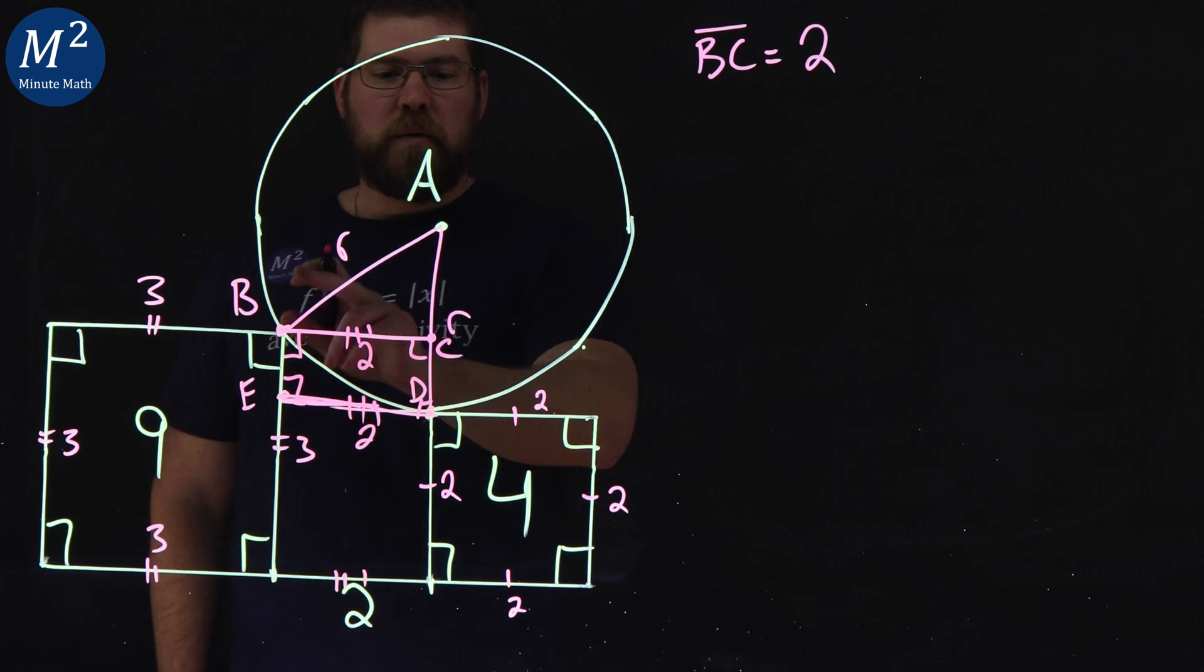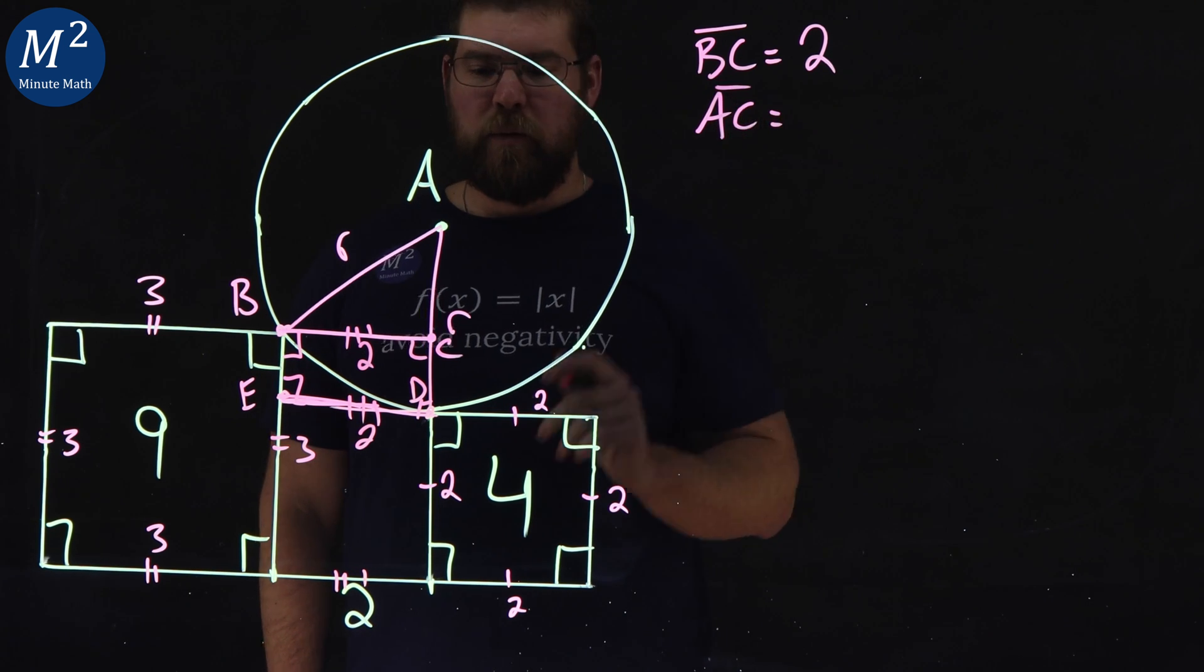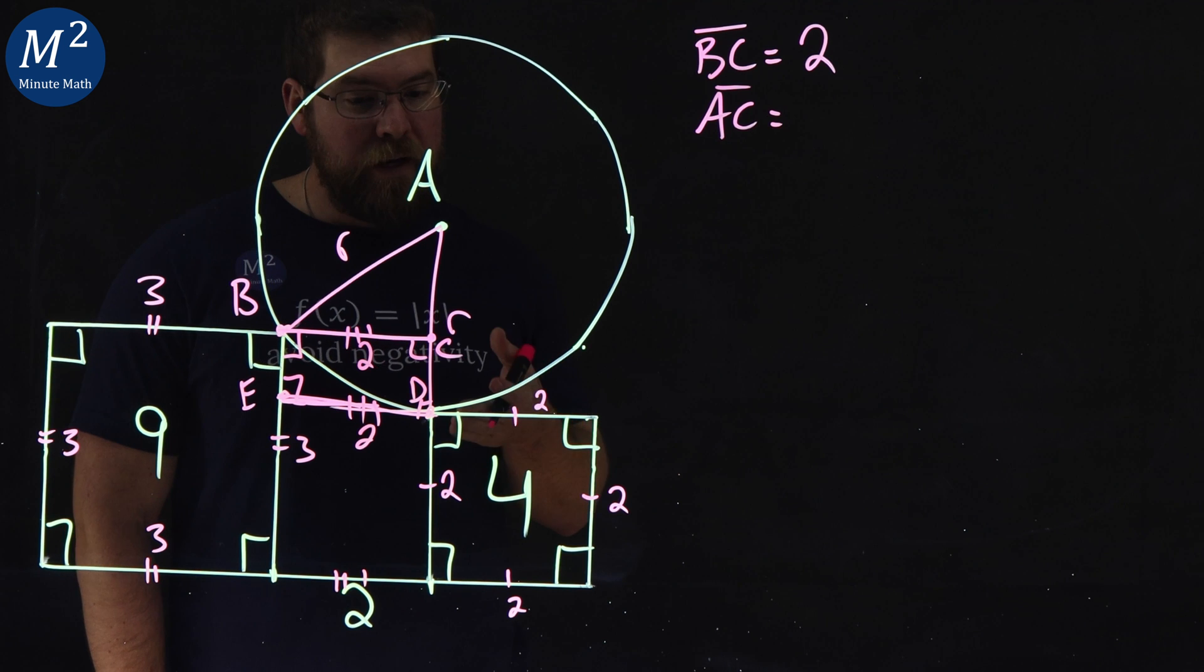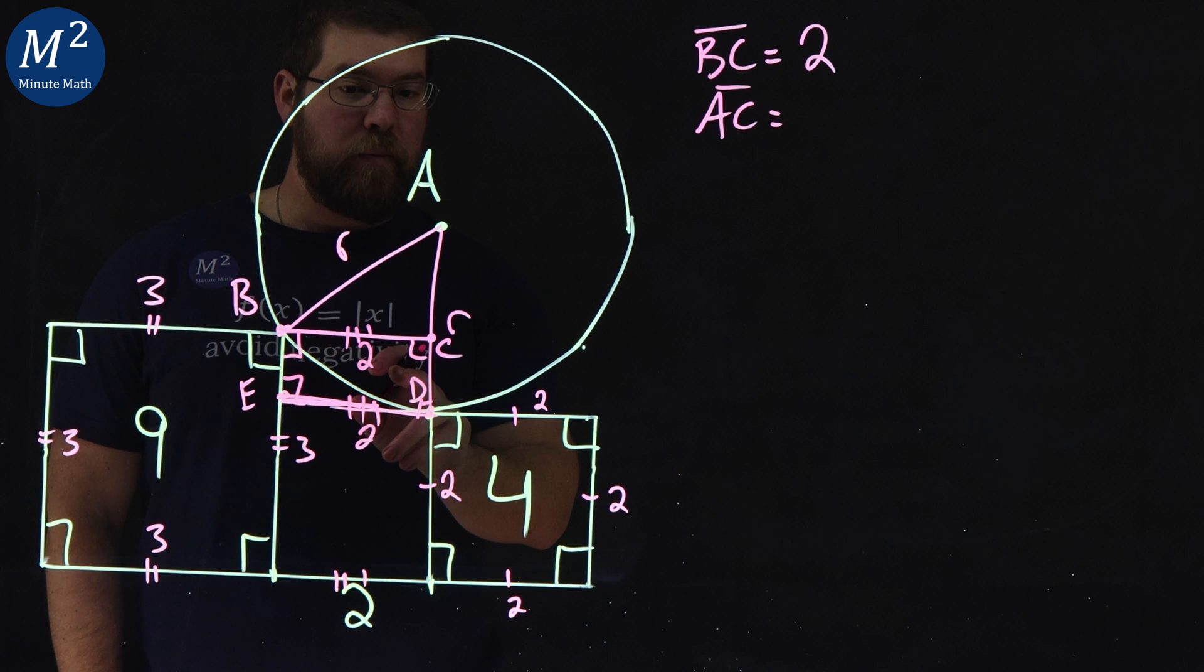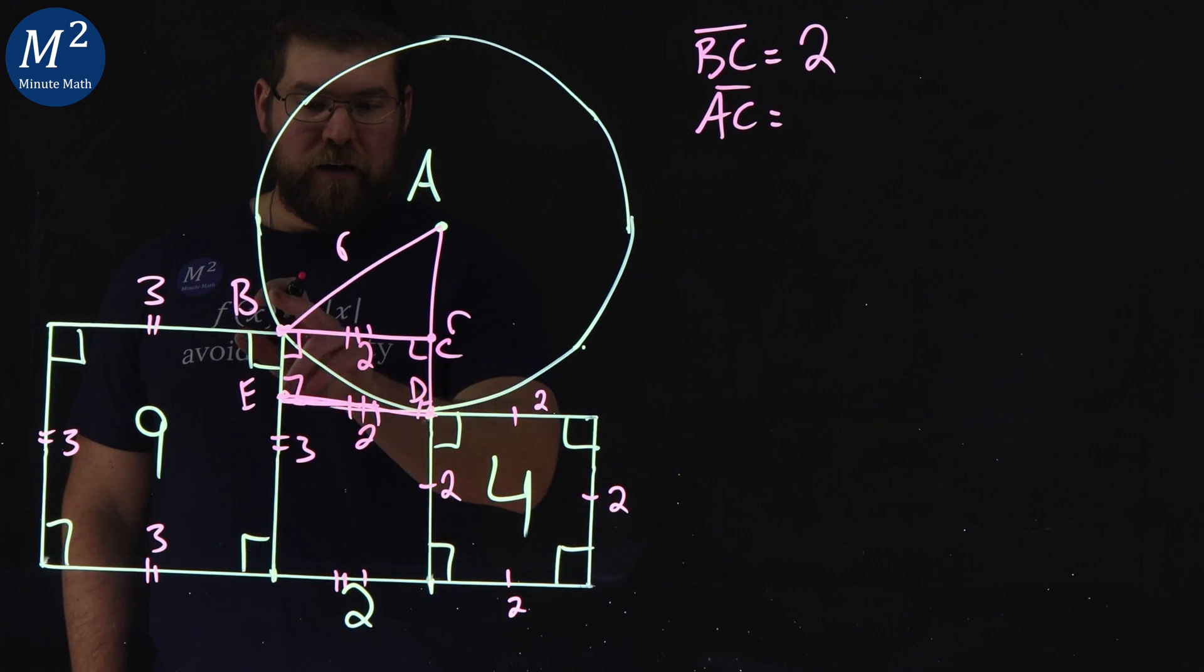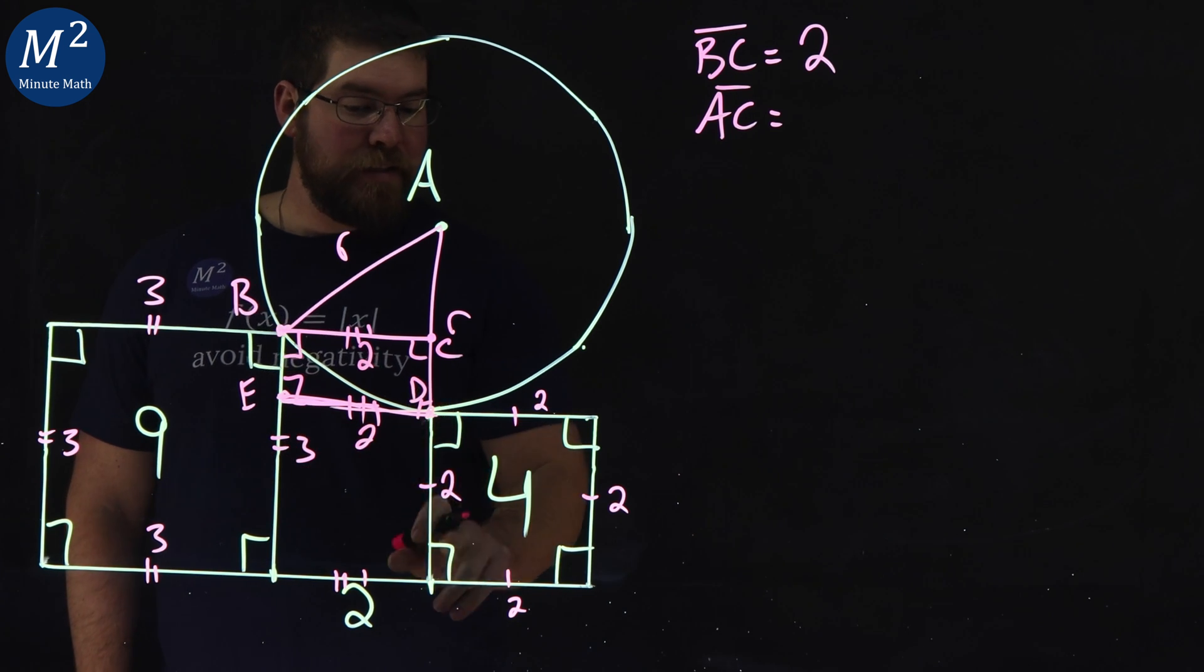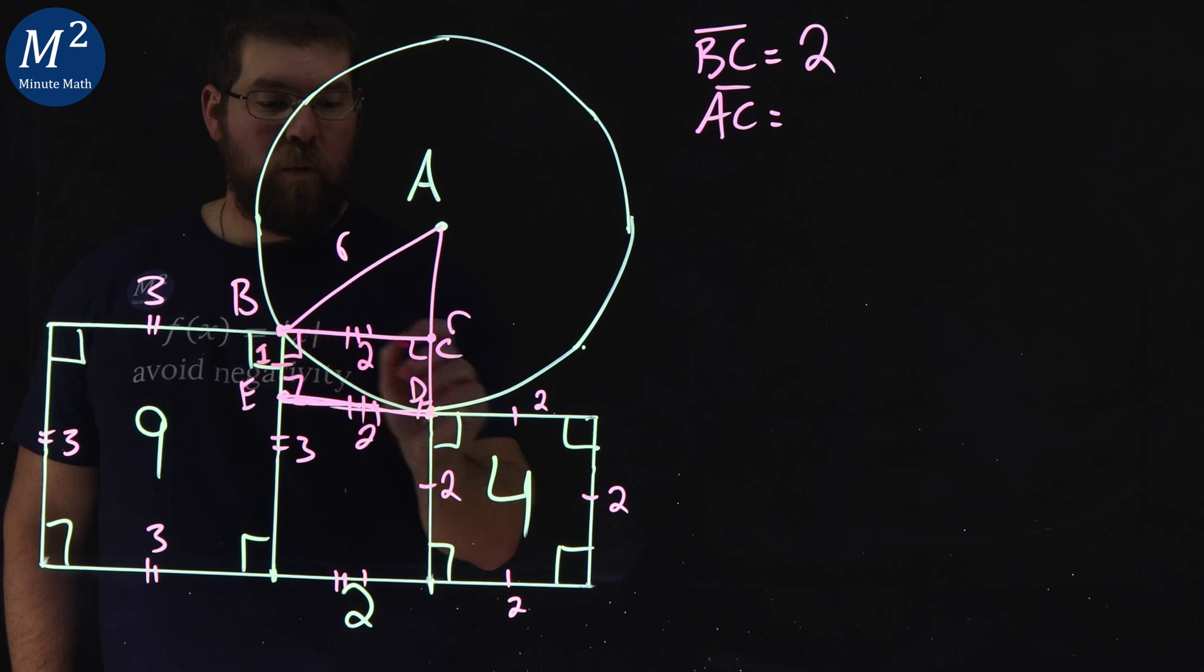Now BA is equal to R. What about AC? What is AC equal to? If AD is the length of R, our radius, AC is going to be whatever this distance is subtracted from it. And what is that distance? This overall side length down here of this big square is three and this part is two.